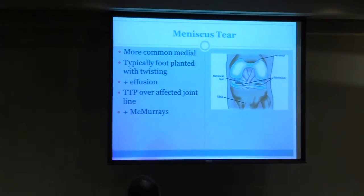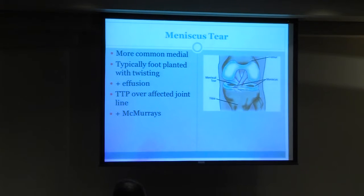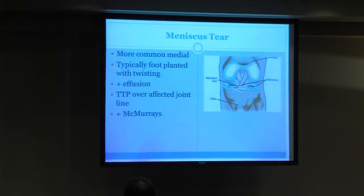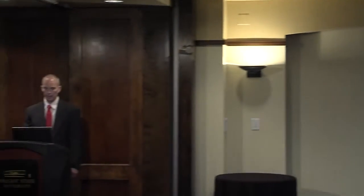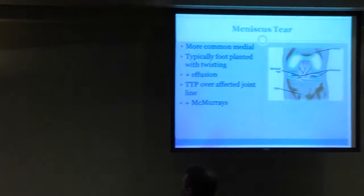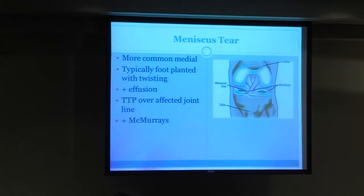Meniscus tears: the foot is usually planted, and it's usually the medial meniscus that gets torn first. There's usually an effusion, tenderness to palpation over the joint, and a positive McMurray's. The way you do the McMurray's is rotation, flexion, rotation, and extension — what you're trying to do is, if this is a meniscus tear, grab that little torn piece with your provocative testing and pinch it to get it to pull.